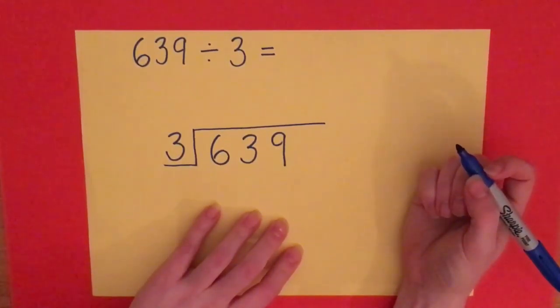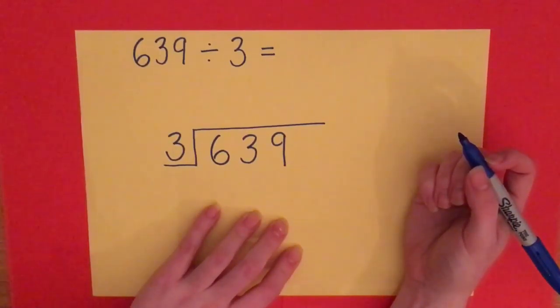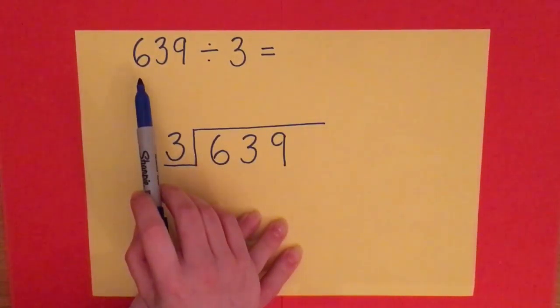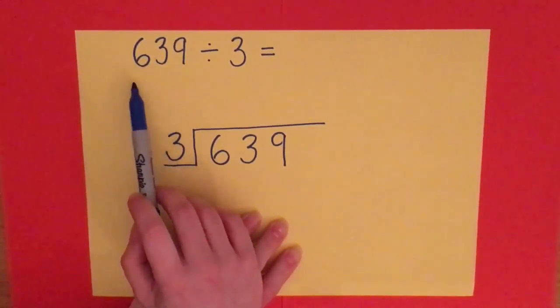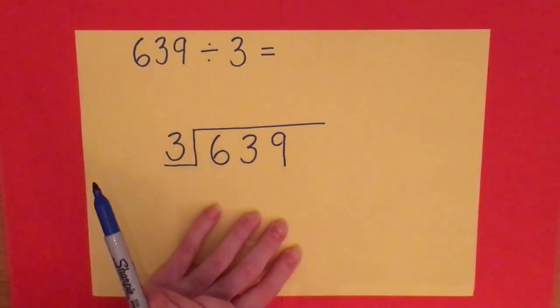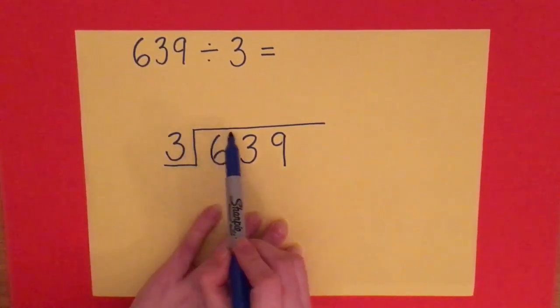Okay, today we are looking at the bus stop method for division. So this is meant to be a really easy way to divide big numbers, normally hundreds, tens, and units, maybe thousands, by a unit, and we use something called a bus stop.